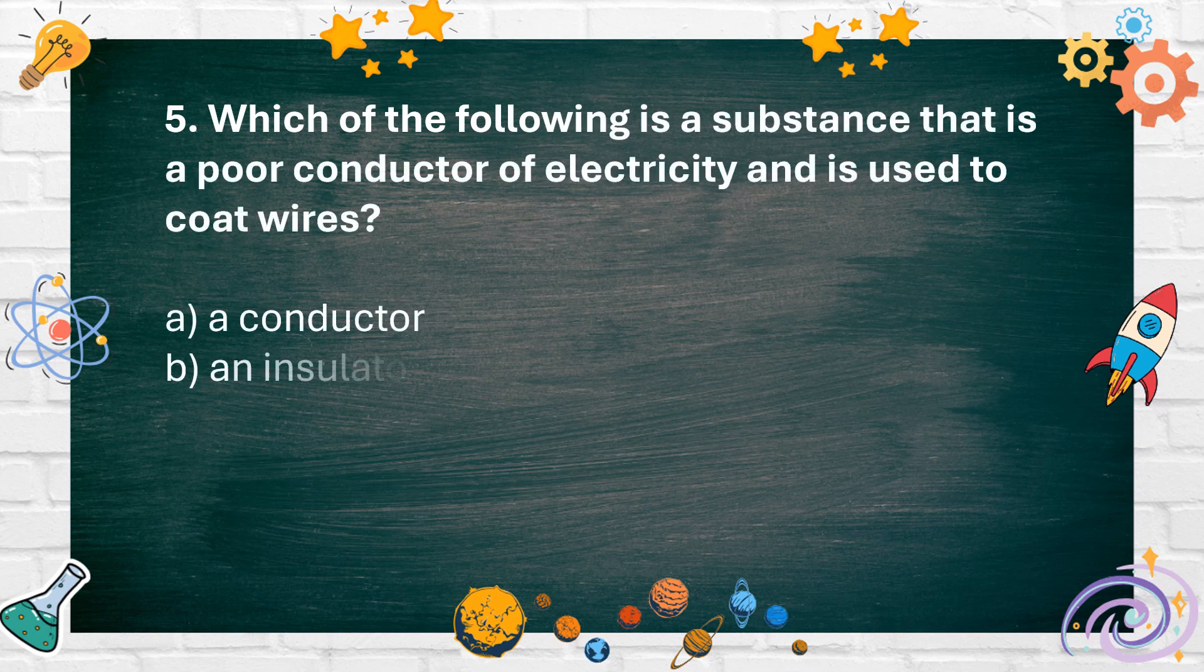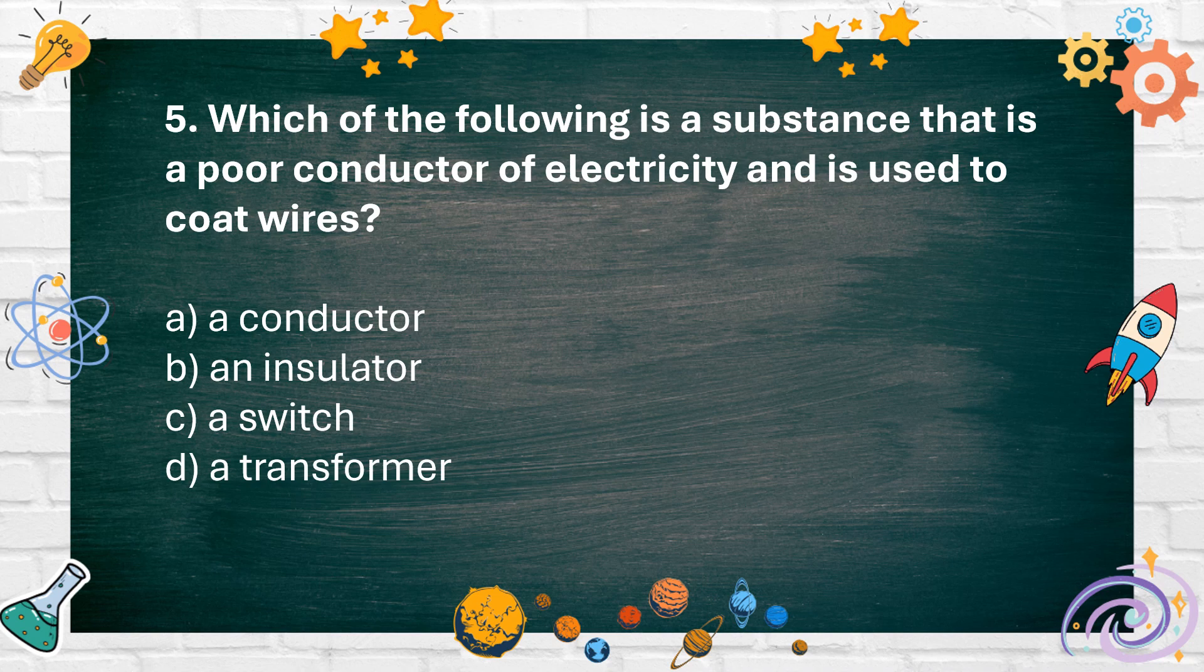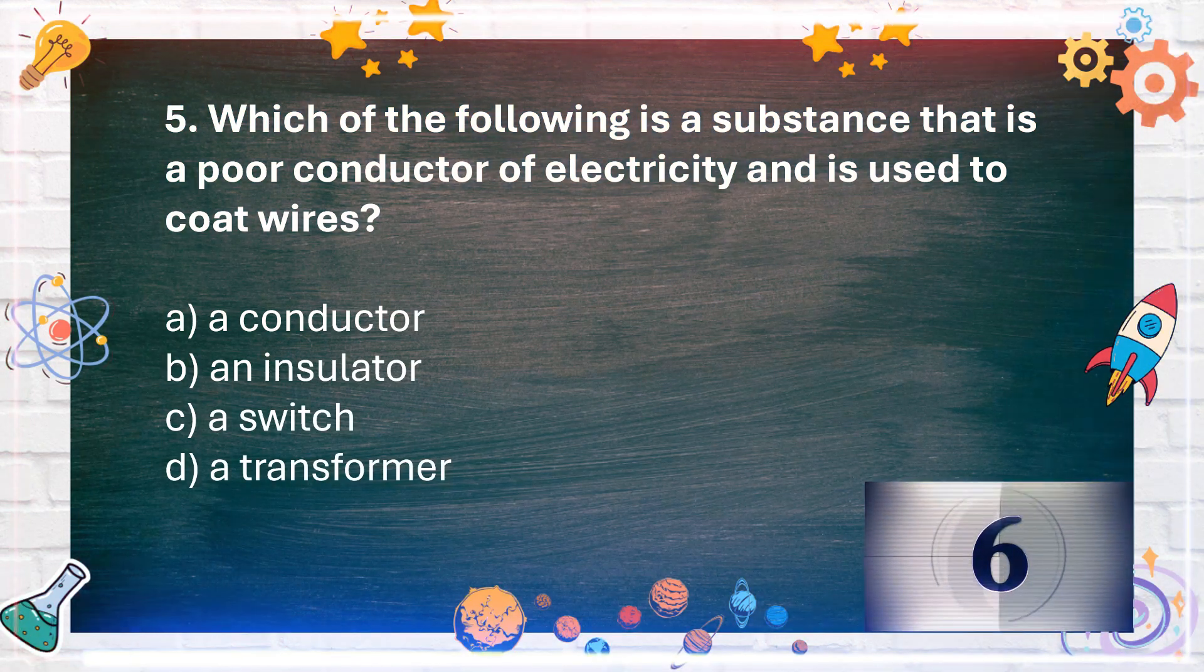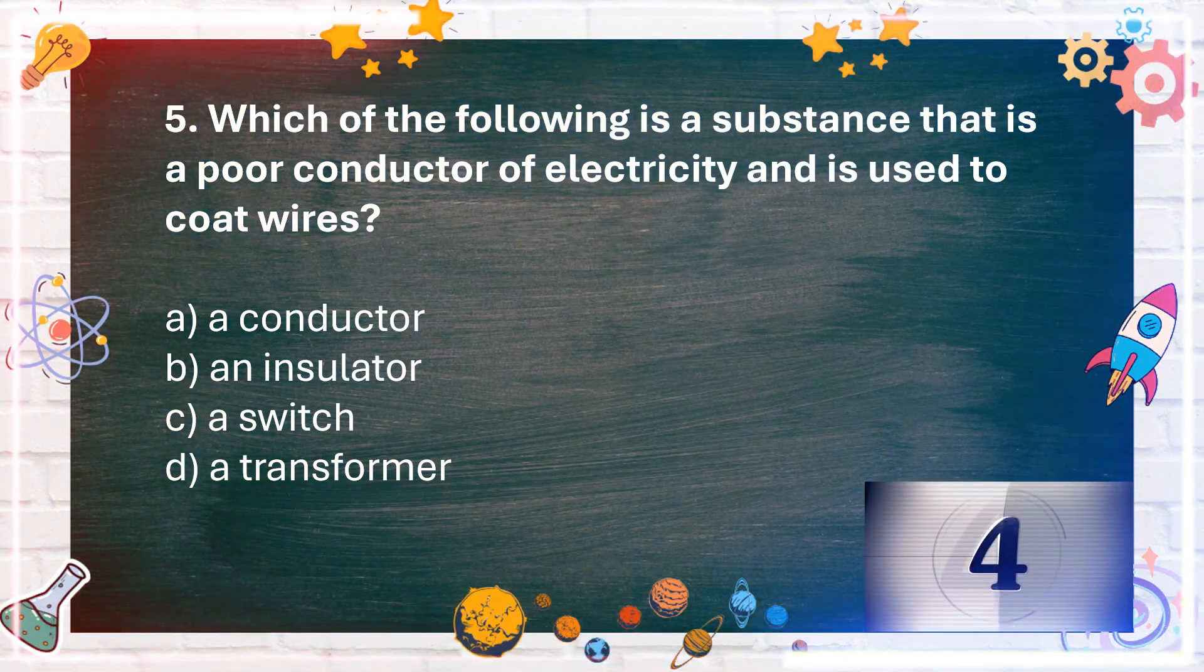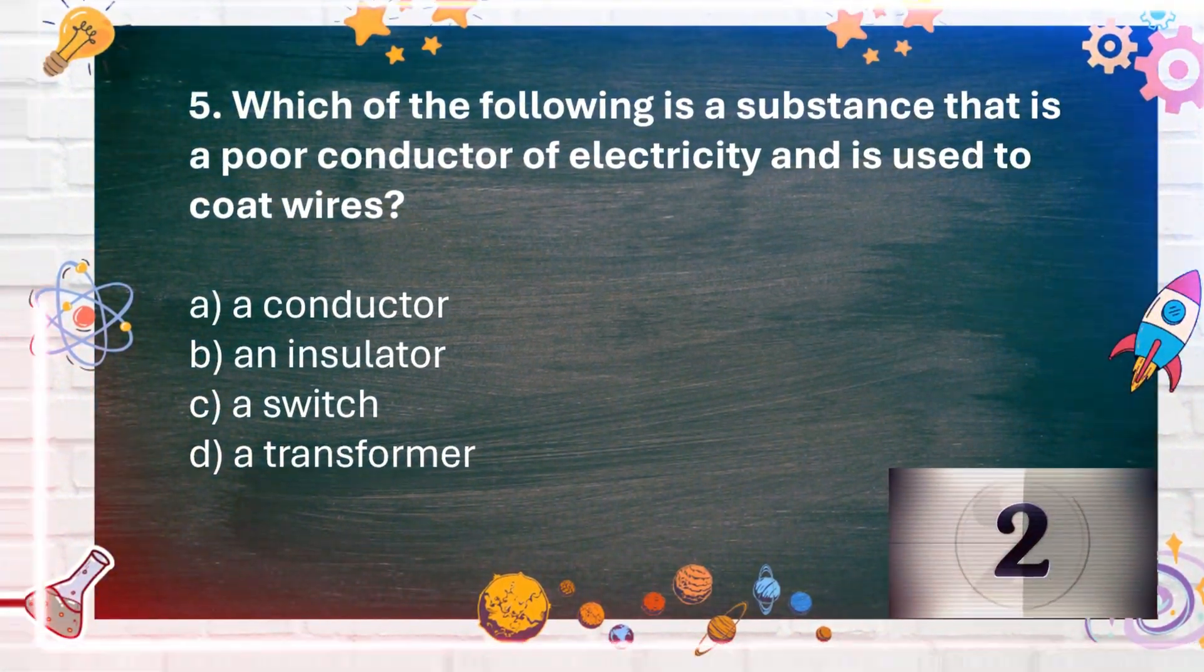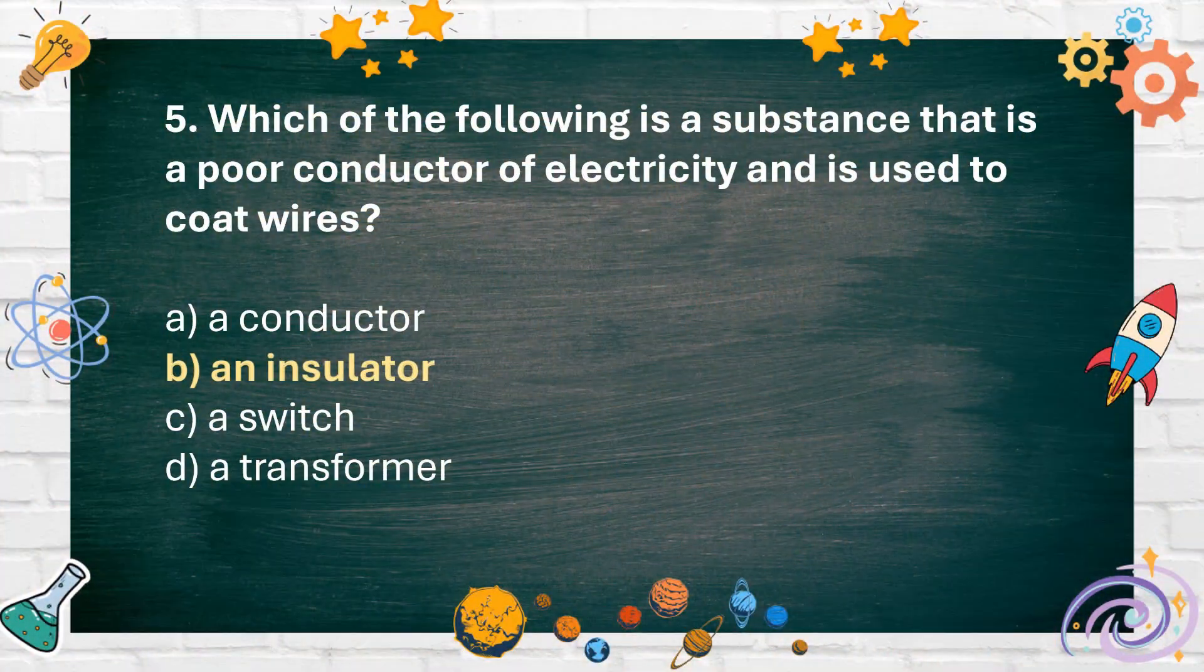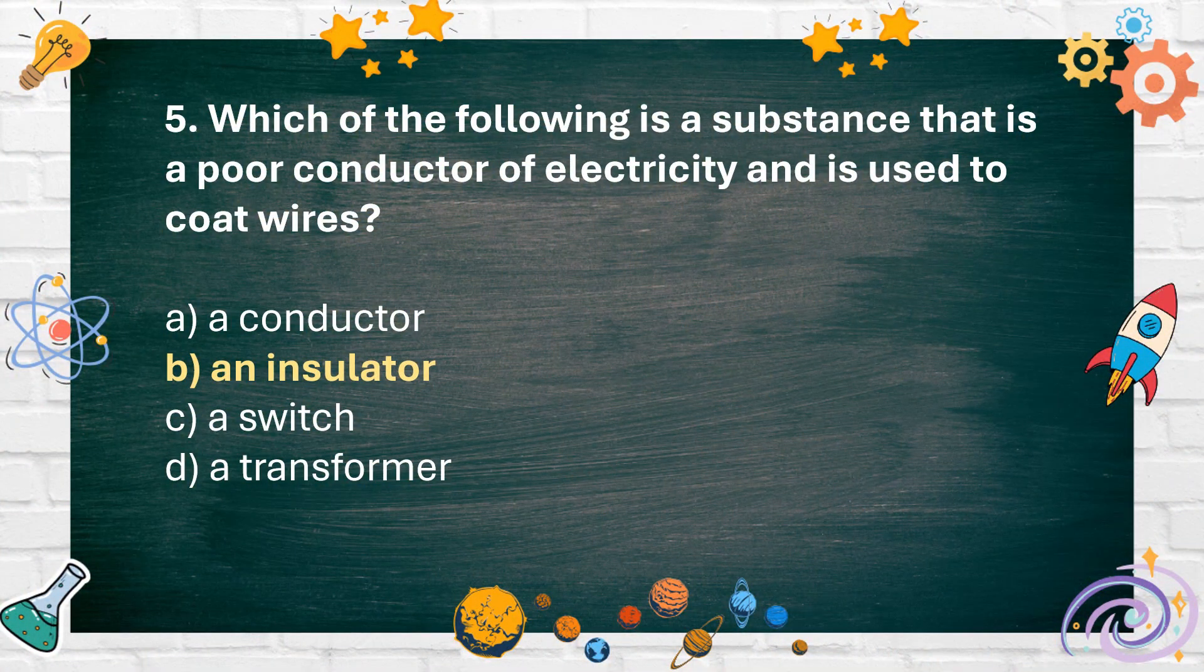Number 5. Which of the following is a substance that is a poor conductor of electricity and is used to coat wires? A. A conductor B. An insulator C. A switch D. A transformer. The answer is B. An insulator.